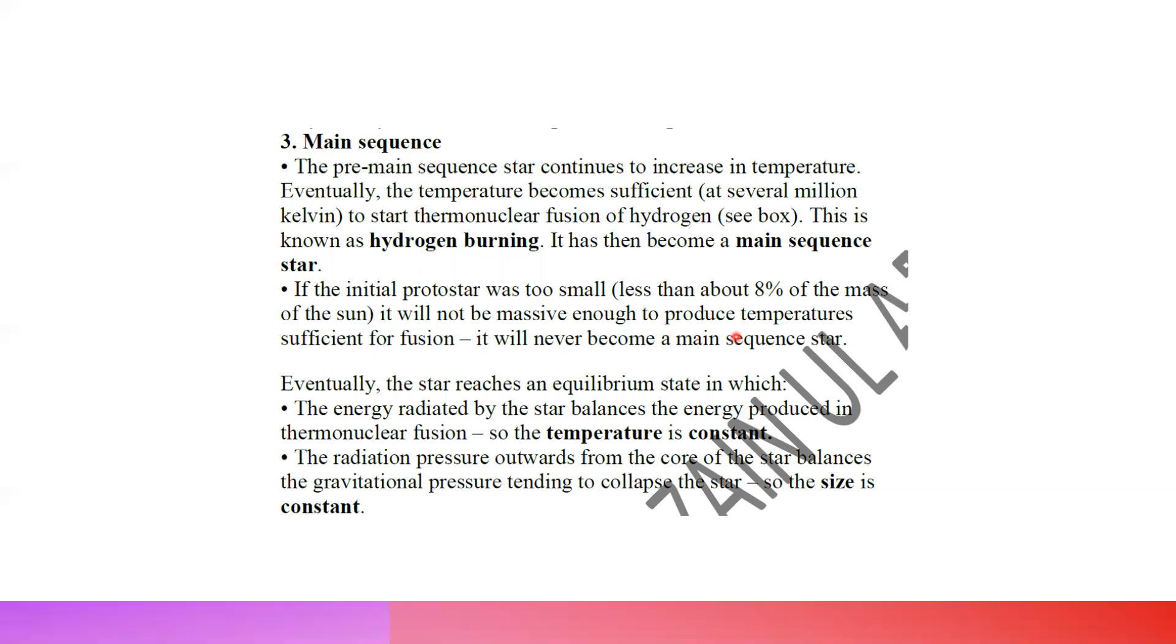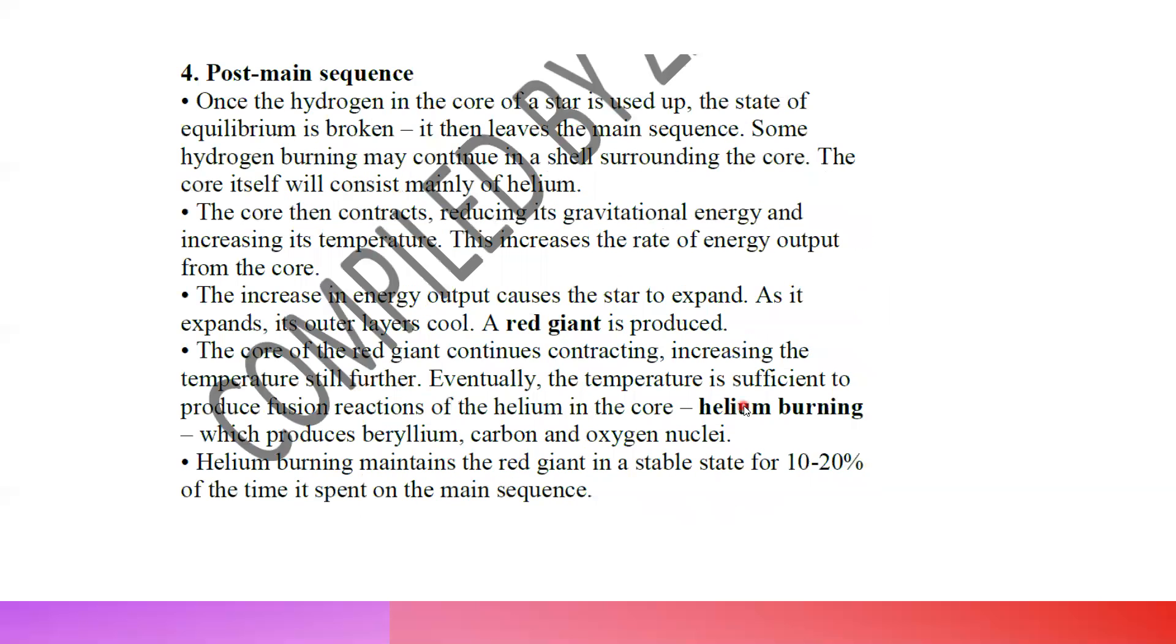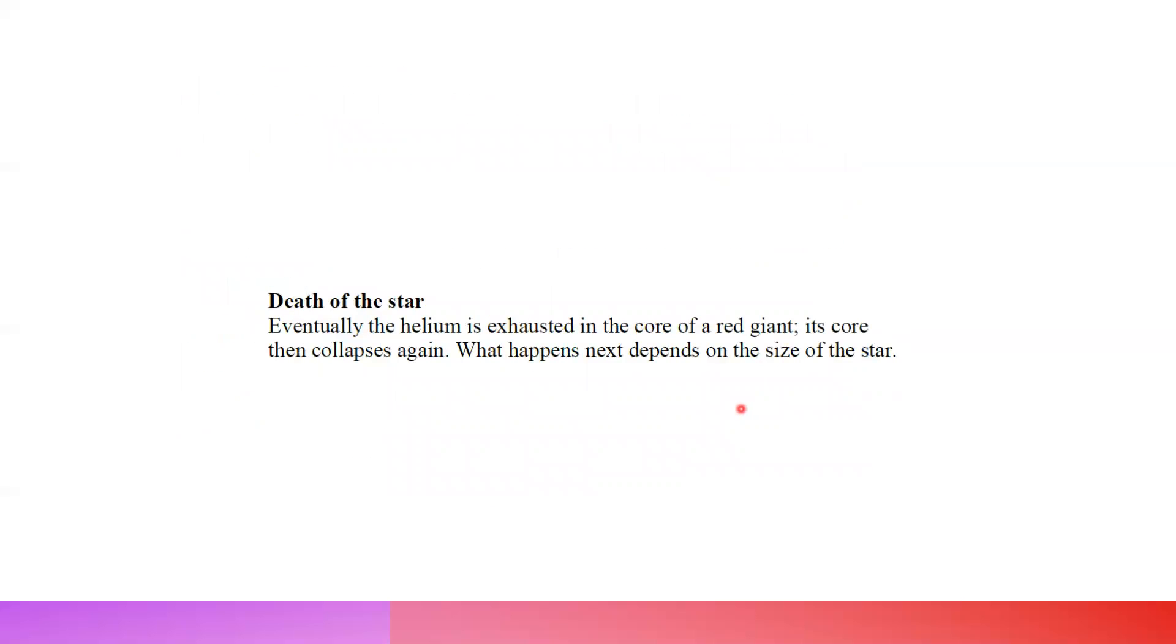In the post-main sequence, once hydrogen is used up in the core, there is no equilibrium or balance. As the core contracts, the gravitational potential energy causes an increase in temperature. Potential energy changes to kinetic, so temperature increases, and that increase causes helium fusion. When helium fusion starts, it releases energy and the star turns into a red giant.